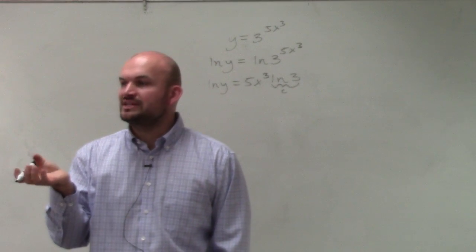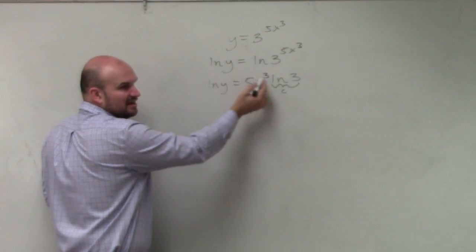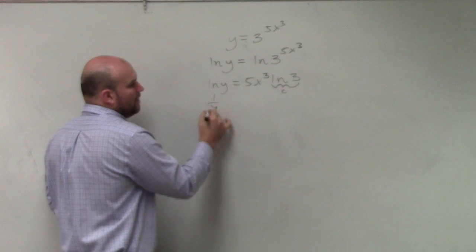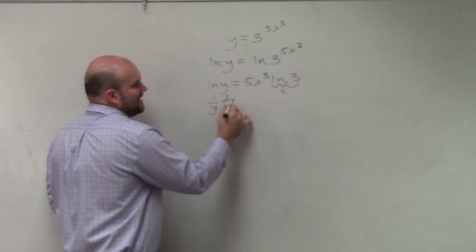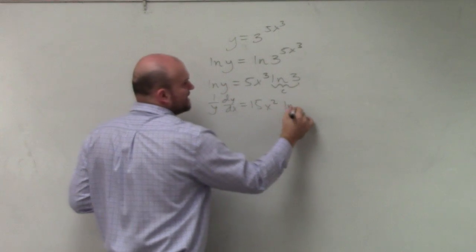So basically, all we're doing is taking the derivative here of this using the power rule, which isn't that bad. We have to take the derivative here, which is 1 over y times dy/dx equals 15x² times the ln of 3.